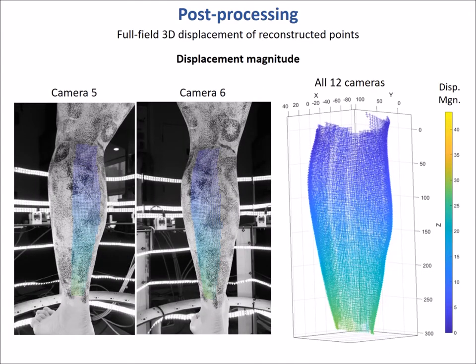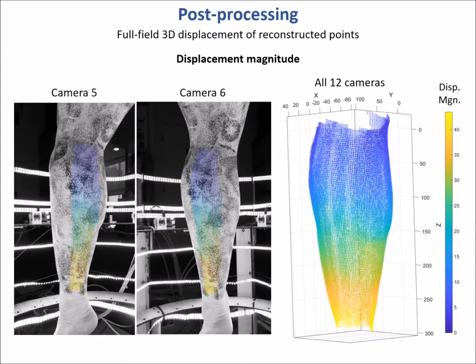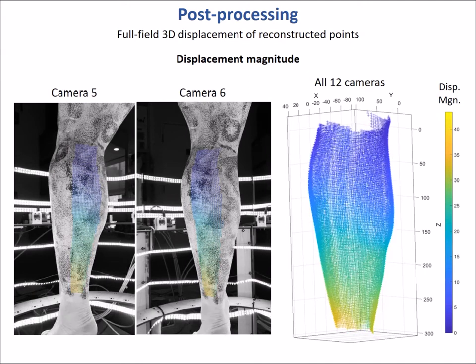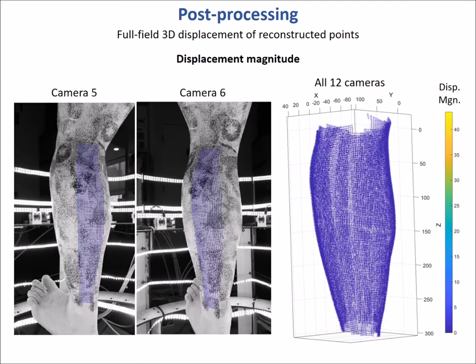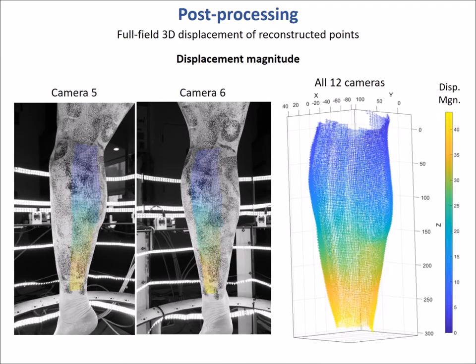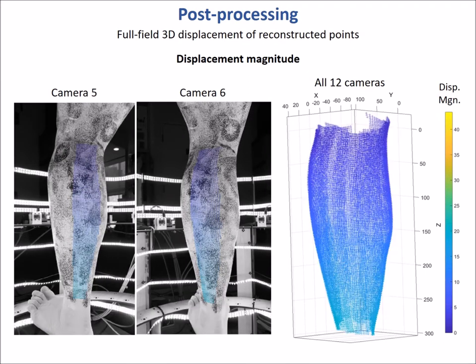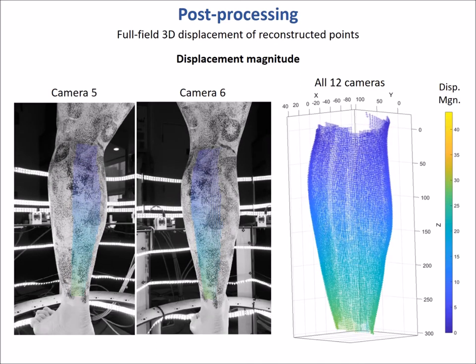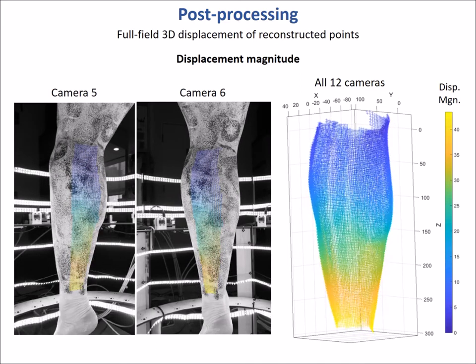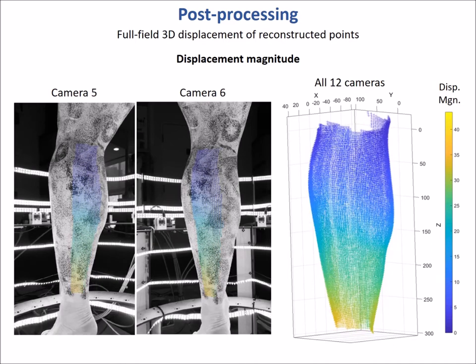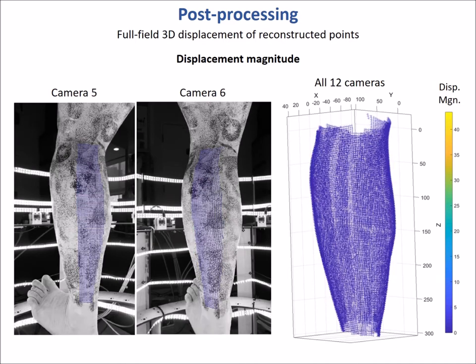The dynamic 3D positions of reconstructed points are used to calculate the 3D displacement field. On the right is shown the displacement magnitude of this vector field, and on the left, these values are mapped back to source images from two of the cameras.